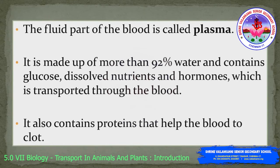The fluid part of the blood is called plasma. It is made up of more than 92 percent water and contains glucose, dissolved nutrients, and hormones which are transported through the blood. It also contains proteins that help the blood to clot.